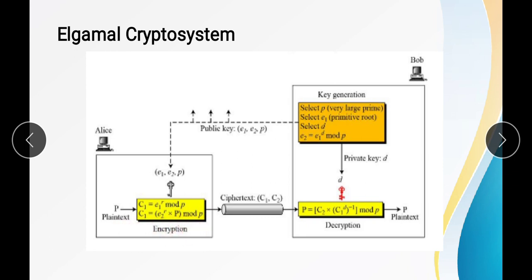After generating the ciphertext, it is sent over a secured network and received by Bob. Bob uses c1 and c2 to recover the plaintext using the decryption formula: pt = c2 × (c1 raised to d) raised to minus 1, mod p. This formula gives us the decrypted plain text.